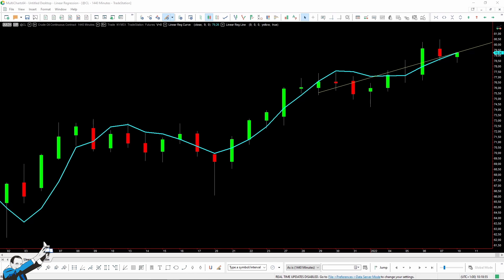The linear regression line updates at each bar, thus configuring different points that, if joined, will identify a curve resulting from the translation of all the lines that update from bar to bar.